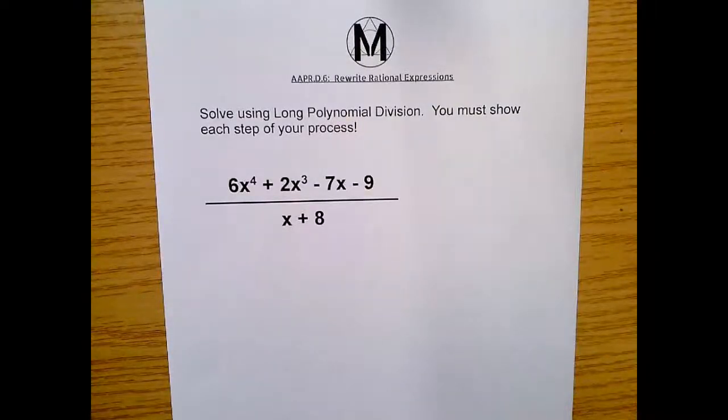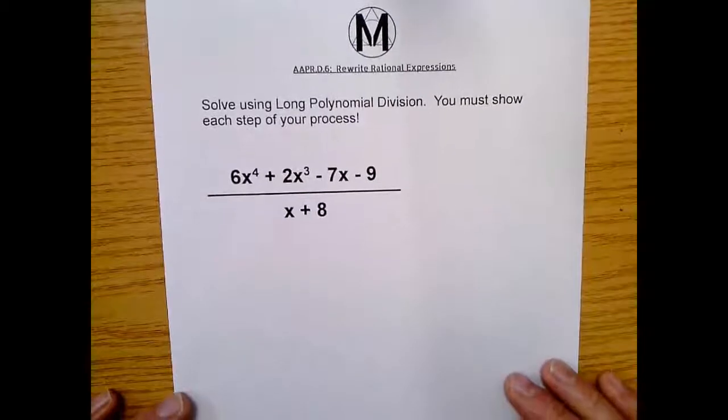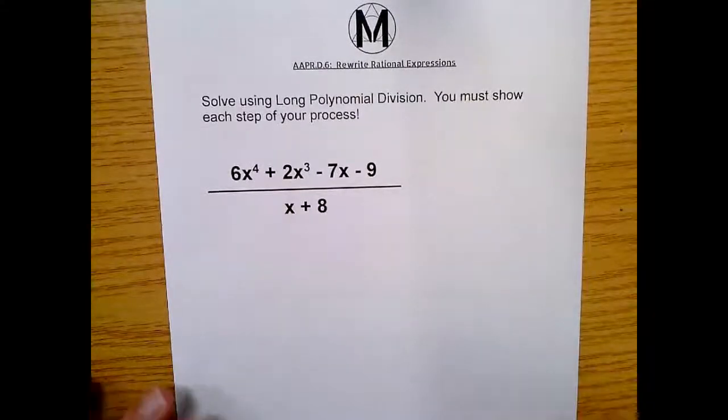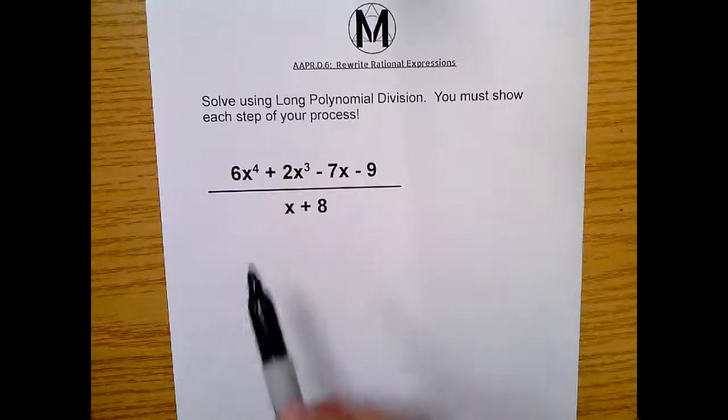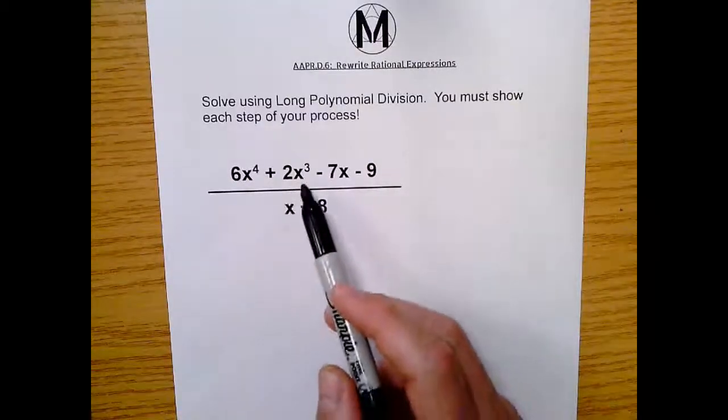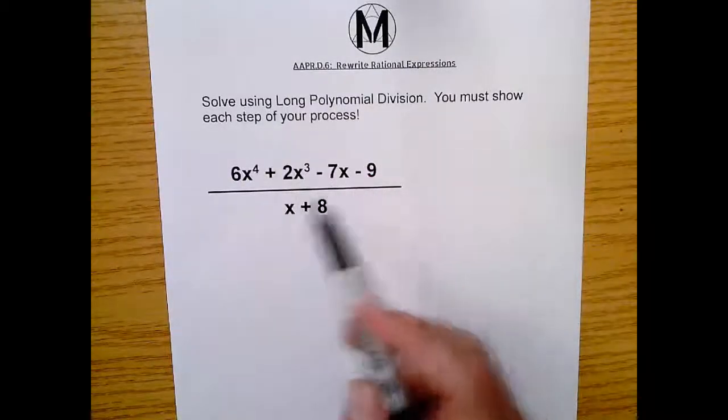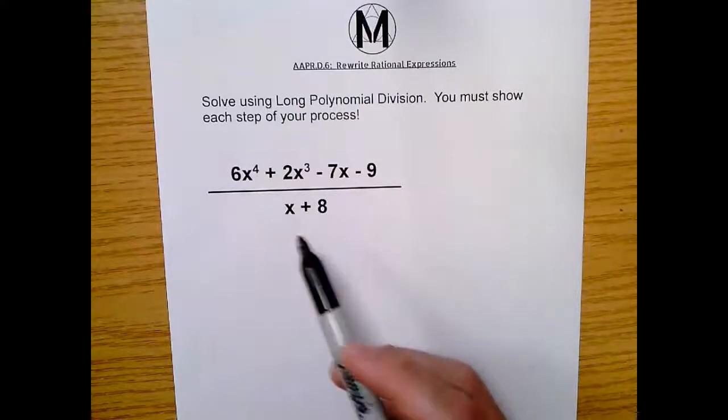All right, let's do some math-ity-math. It says solve using long polynomial division. And it says you must show each step of your process. We're happy to do that because we're going to be proud of our work. We're going to show it off. So this says 6x to the 4th plus 2x to the 3rd minus 7x minus 9 all divided by x plus 8.